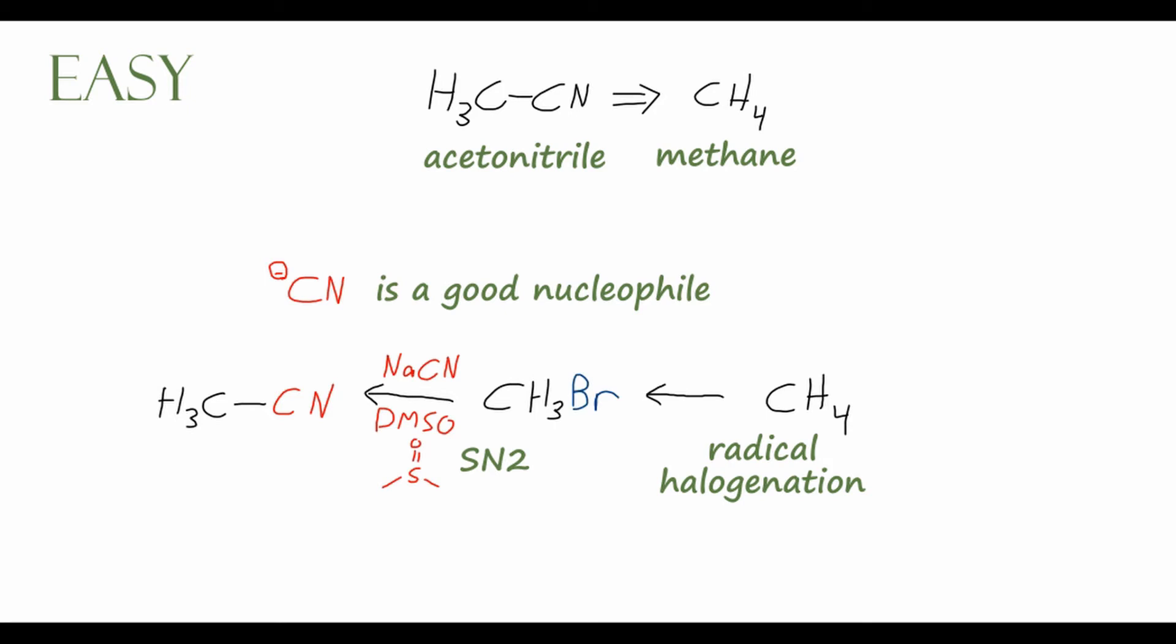The way we can do that is by using radical halogenation. We can treat our methane with bromine, Br2, and then we need ultraviolet light, so we can write h nu. Ultraviolet light initiates that radical process by breaking the bromine-bromine bond and starting that radical halogenation. If we limit the amount of bromine in our reaction, we can ensure that the halogenation will only happen once, giving us just the monobrominated product instead of dibromomethane or tribromomethane.